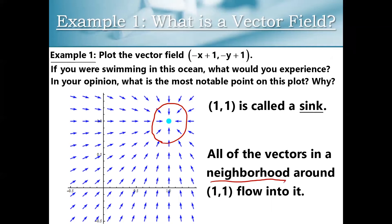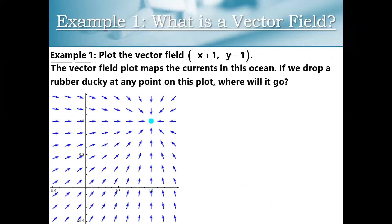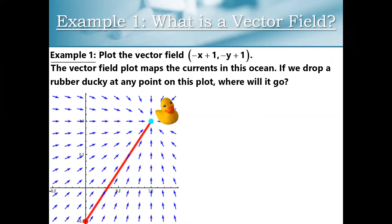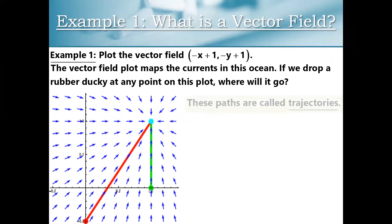The term 'neighborhood' doesn't sound like a mathematical word but it actually comes up all of the time in mathematical analysis. We could also do some trajectory analysis. Imagine that you drop a rubber ducky into this water and follow where the ducky would travel. There's a trajectory that flows into the sink. If you drop the rubber ducky somewhere else and follow that trajectory, that rubber ducky ends up at the same sink. These paths are called trajectories.